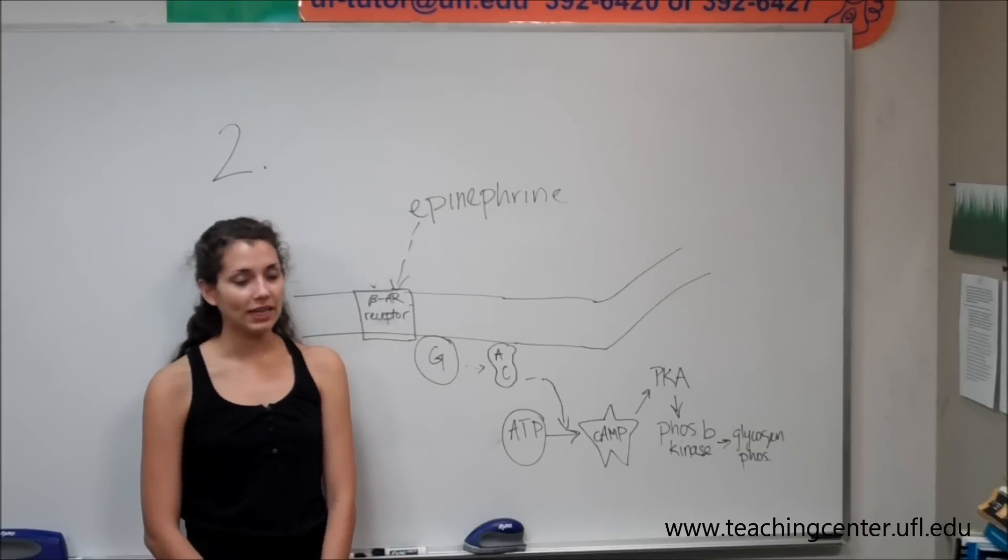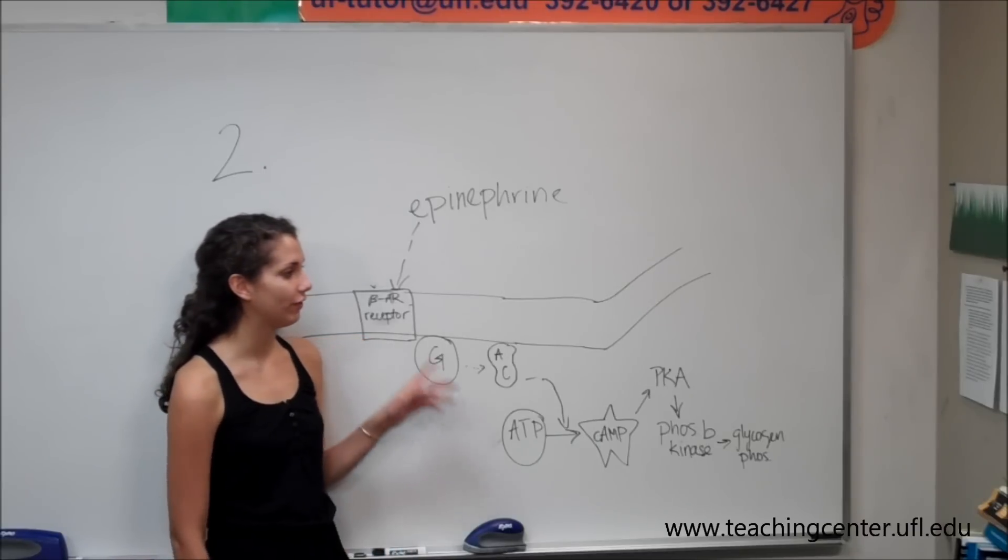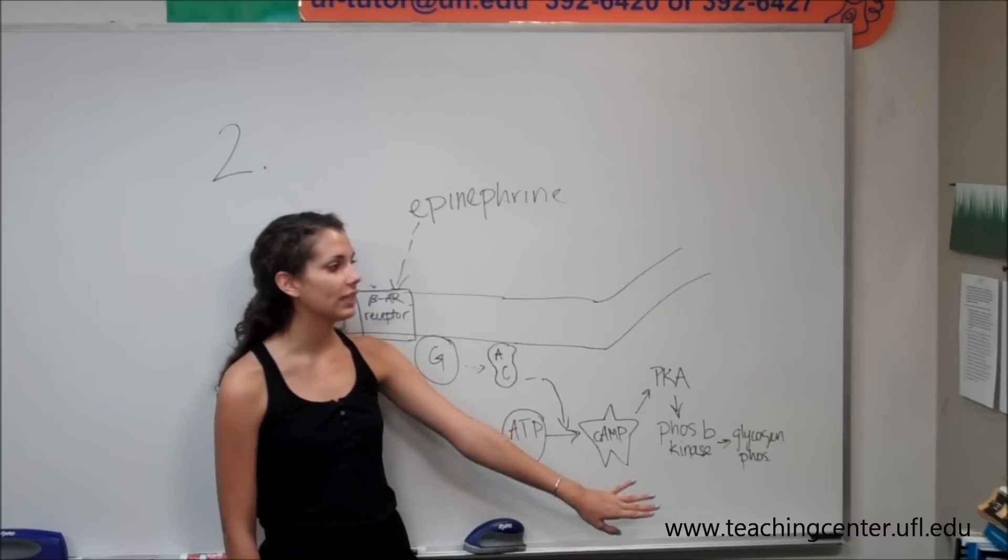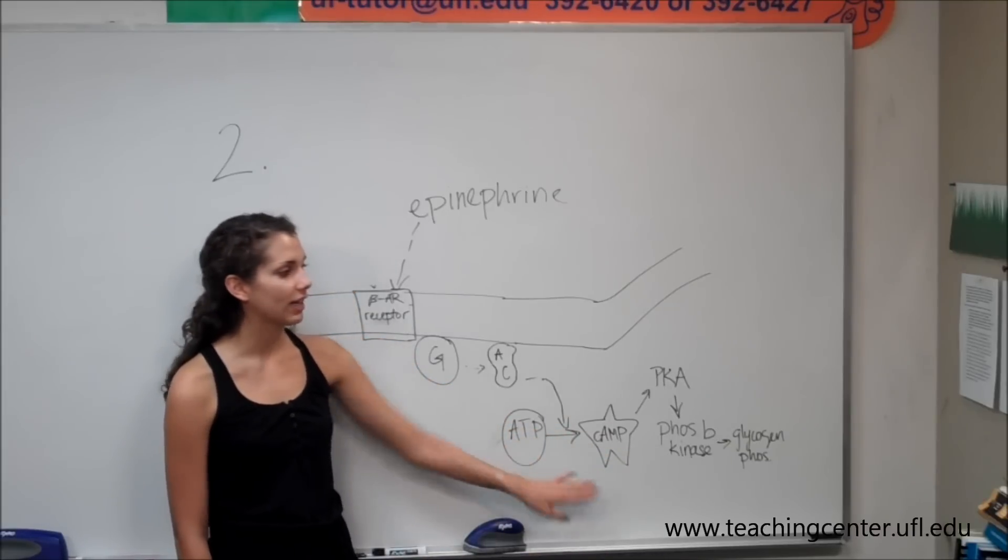So because substance X is produced after treatment with epinephrine and X stimulates glycogen phosphorylase, substance X must be the second messenger.